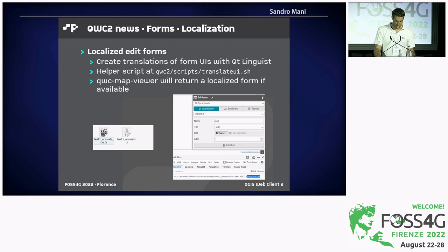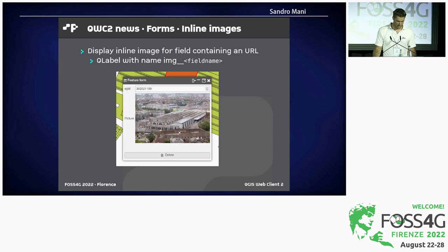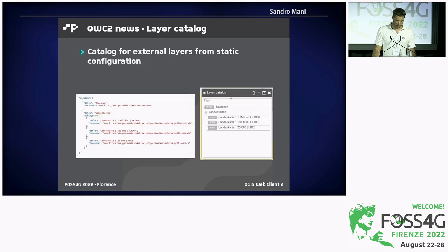An additional new feature is localization of forms, implemented by translating the form via the Qt Linguist system. QWC will look for a translation file and load it to present a translated form. Inline images is a small addition to present static images inside the form — if you prefix the widget in the Qt Designer form with 'image' and then the field name, it will display the field value containing a URL as an image. Layer catalog offers a predefined set of external layers to users, so the administrator can configure the sources they wish to offer, and it displays as a browsable tree in the web client.